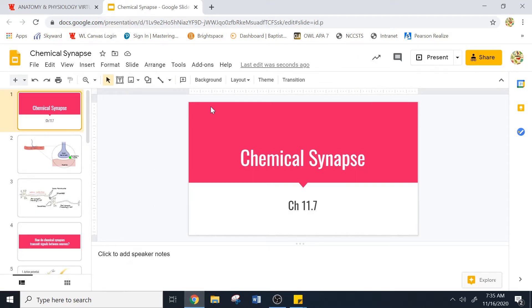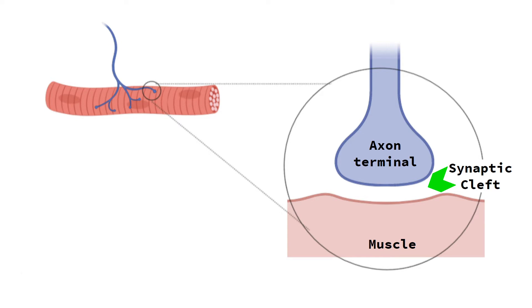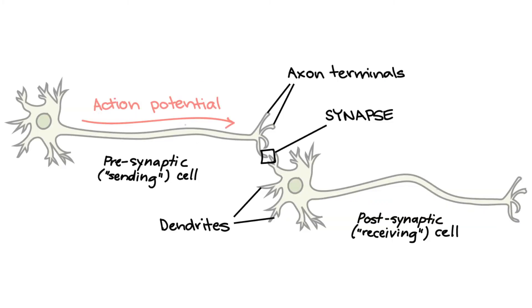Today we're going to talk about the chemical synapse. This might sound familiar because we've already studied a specialized chemical synapse known as the neuromuscular junction — where the nerve meets a muscle fiber, the axon terminal releases acetylcholine, a neurotransmitter, which binds to receptors on muscle to signal contraction. Today we're going to talk about the chemical synapse more generically, between one neuron and another neuron.